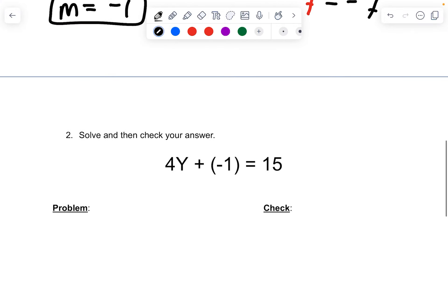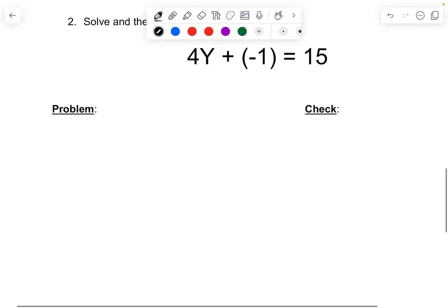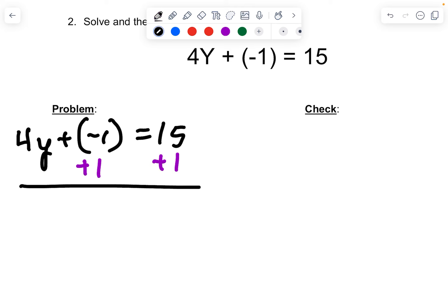All right, let's move down to the second problem. Again, I'm going to write the original problem. And I want to get the y by itself. So I want to get rid of the negative 1. I'm going to add 1 to each side. So 4y equals 15 plus 1 is 16. I'm going to divide both sides by the number in front of y, which is 4. And I end up with y equals 4.